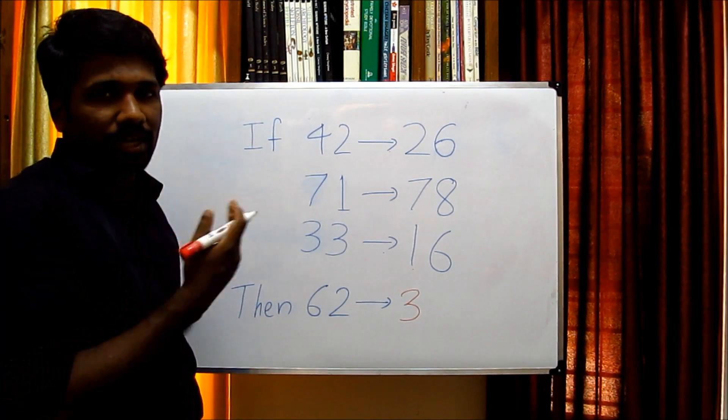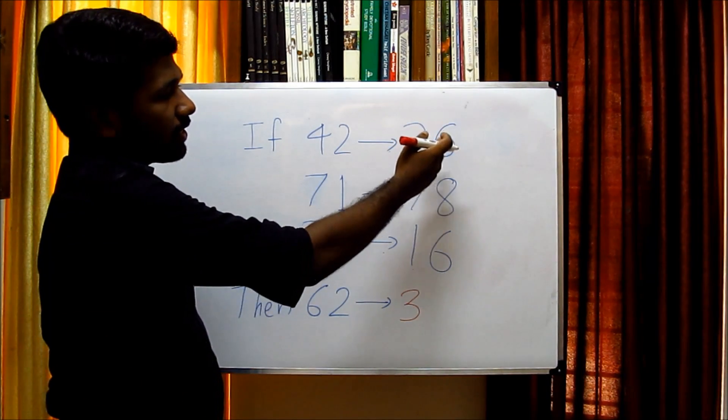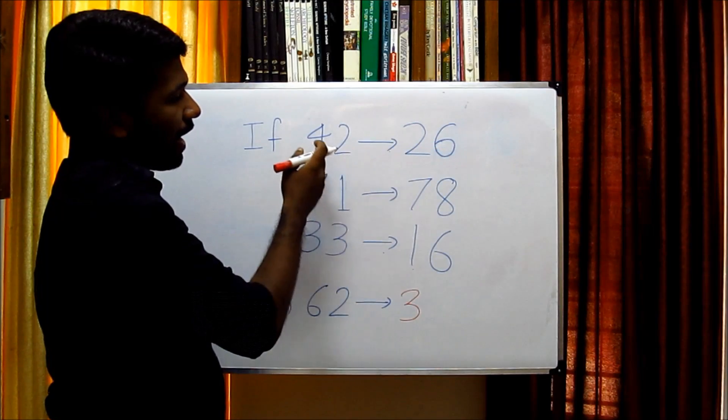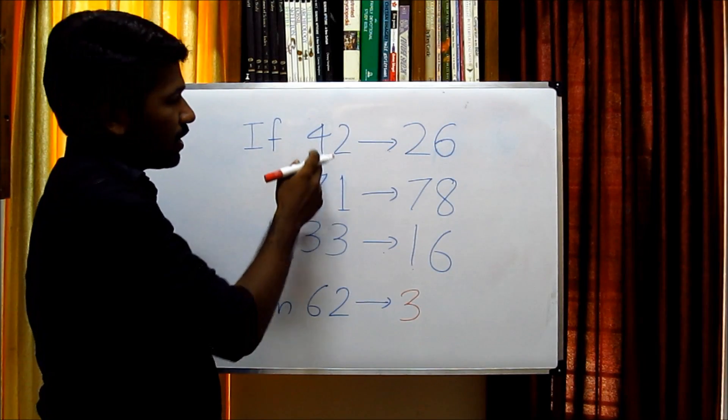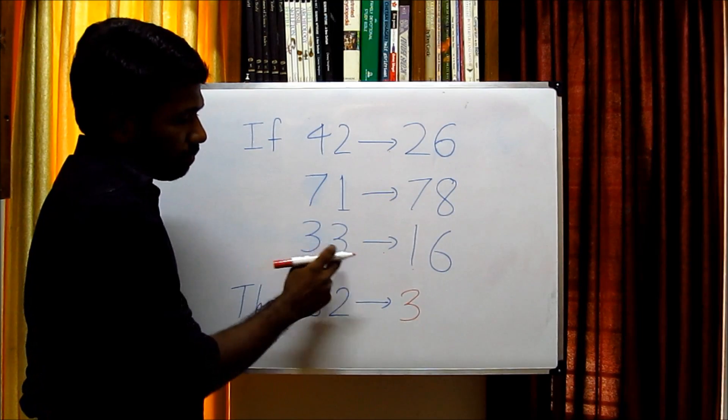Now let us analyze the second digit. Here, we can see that the second digit in the right side is formed by adding the two digits in the left side. That is, 4 plus 2 is 6, 7 plus 1 is 8, 3 plus 3 is 6.